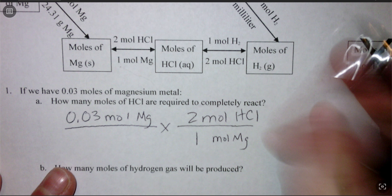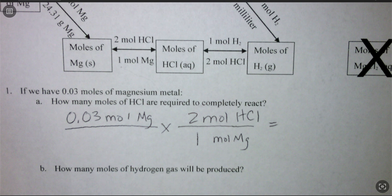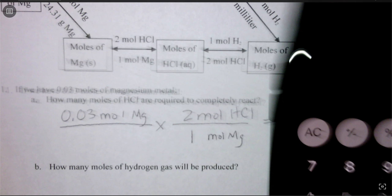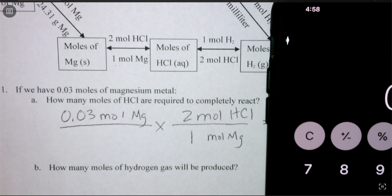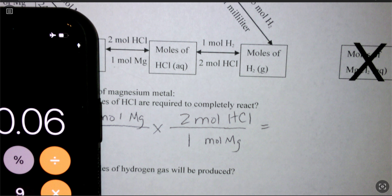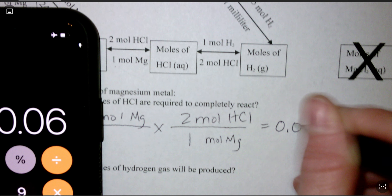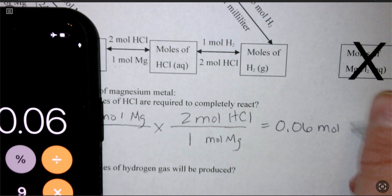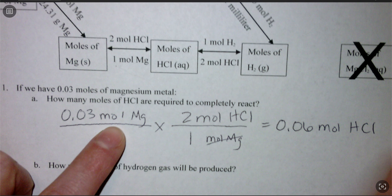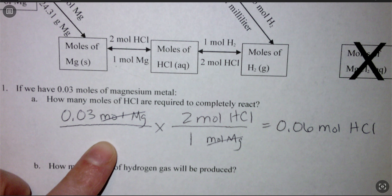So we solve this out. We're given 0.03 moles of magnesium, which is right here on the map. To get over to moles of hydrochloric acid, this is the conversion we use. We need to make sure that whatever unit is at the top is the unit at the bottom of the next fraction — moles of magnesium at the bottom. The conversion is one mole of magnesium to two moles of hydrochloric acid. Multiplying across: 0.03 times 2 gives us 0.06 moles of hydrochloric acid, because moles of magnesium cancels out.